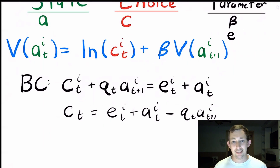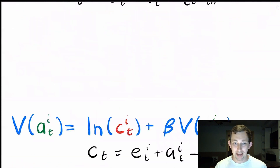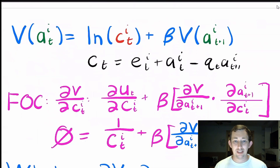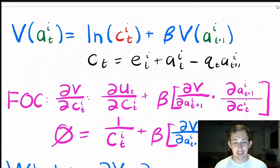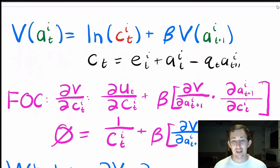Our budget constraint is: consumption plus assets bought for tomorrow equals my endowment plus assets I have today. I'll solve that for c_t so I have everything in terms of assets and don't need to think about two different variables. The first order condition is dV/dc_t equals zero by the envelope theorem, which equals du/dc_t plus beta times the derivative of the value function with respect to the state variable tomorrow, times the derivative of that state variable tomorrow with respect to consumption today.